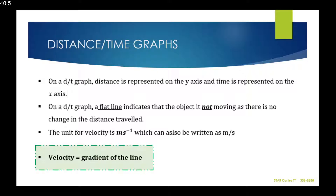So if we have a stage of travel and we would like to find the velocity during that stage, we find the gradient of the line. Or we can use the formula: distance divided by time.